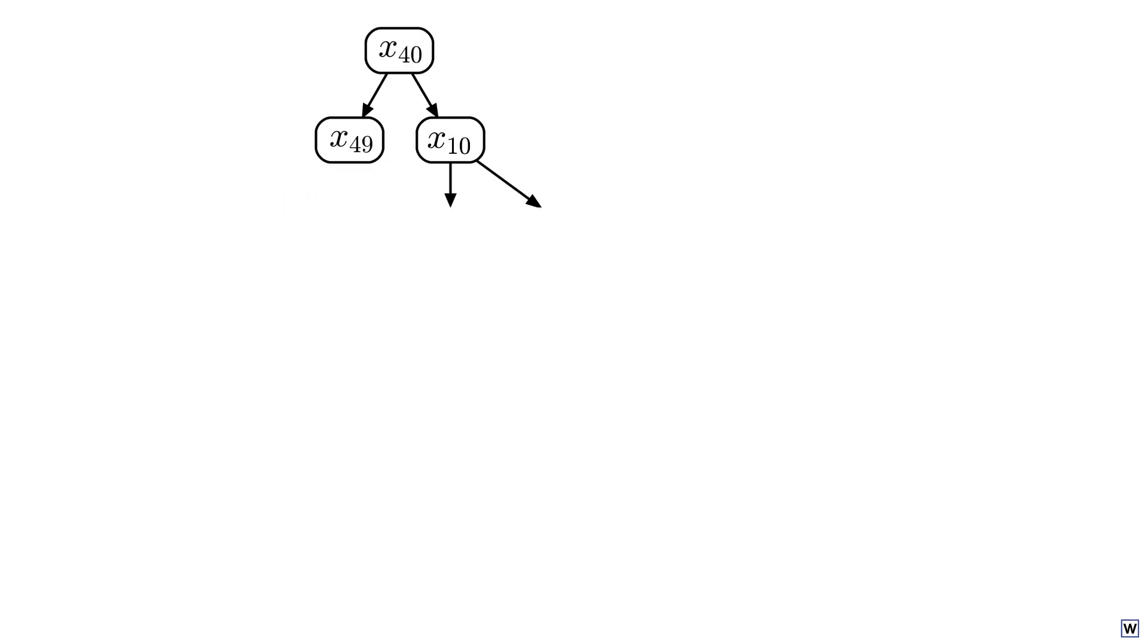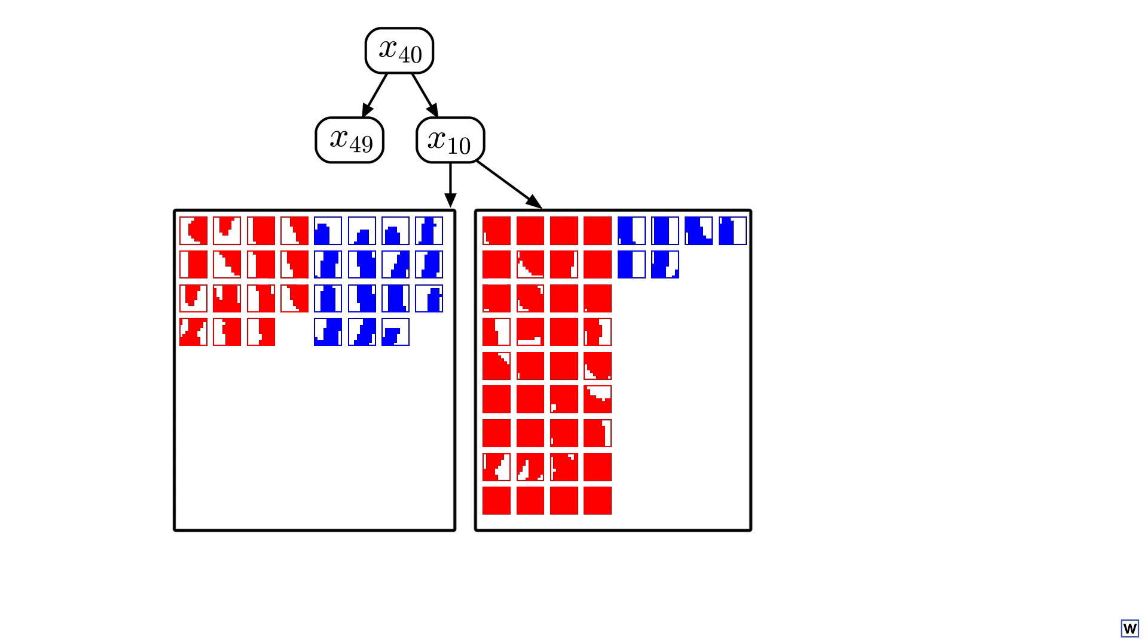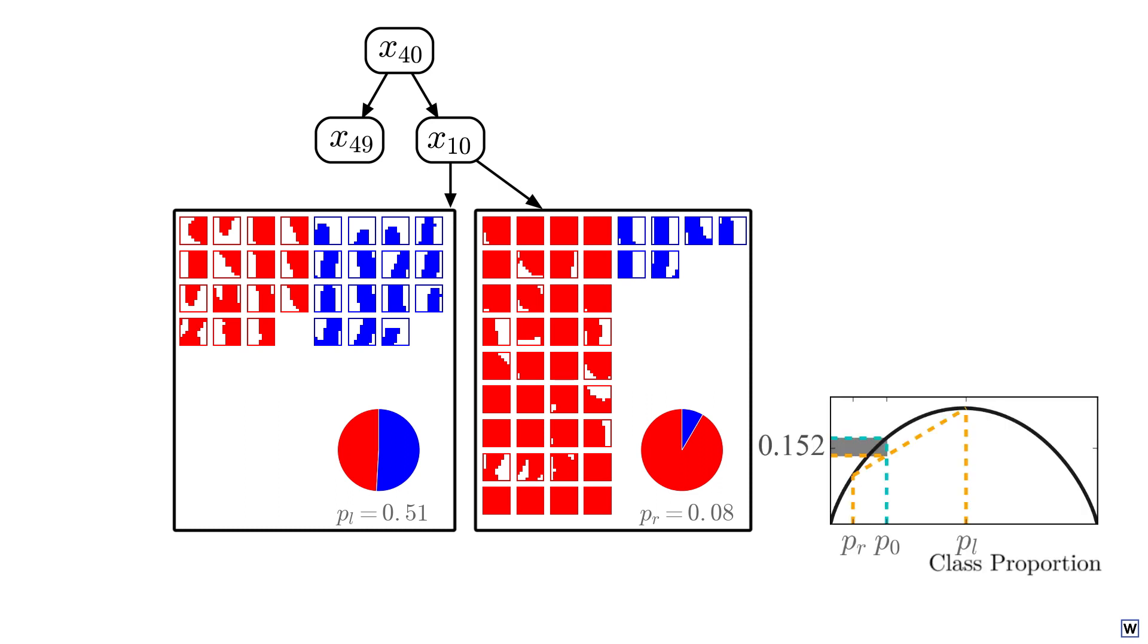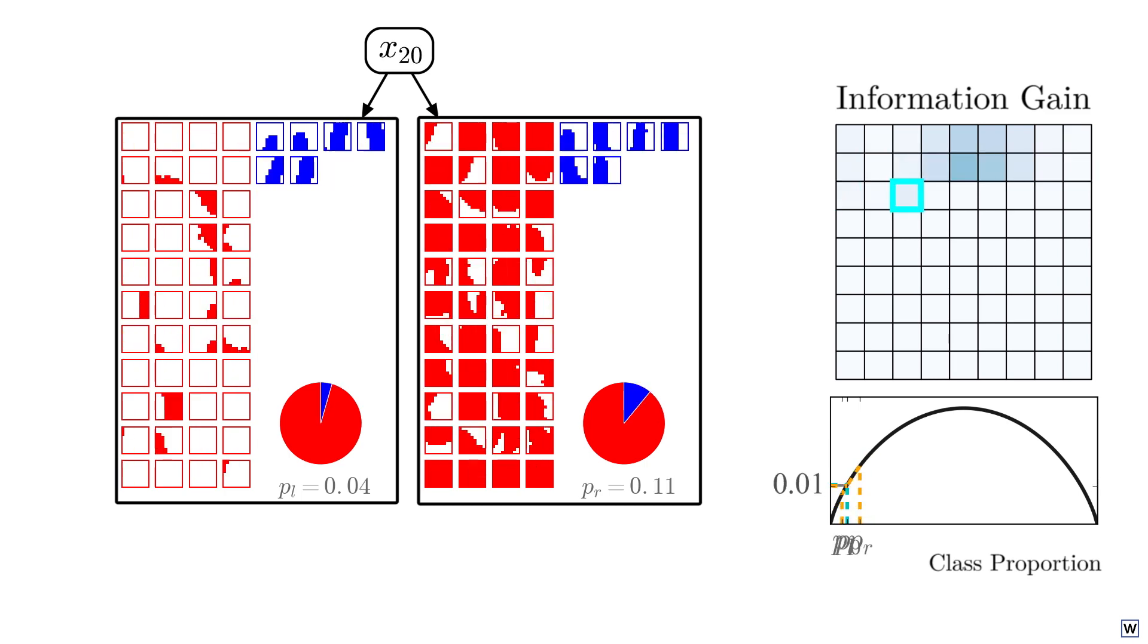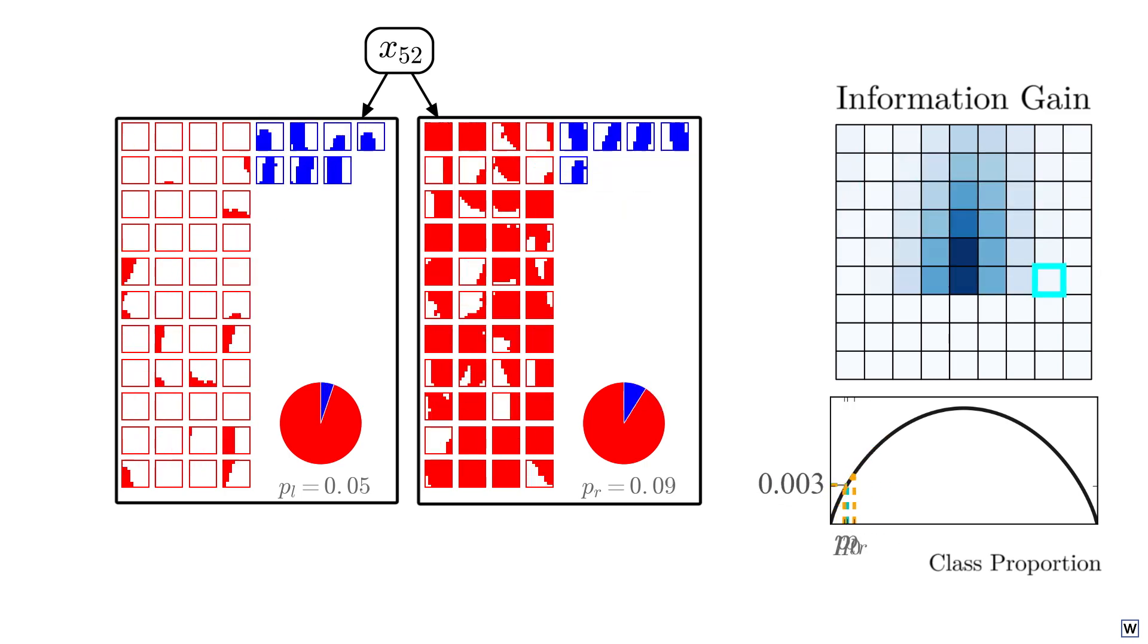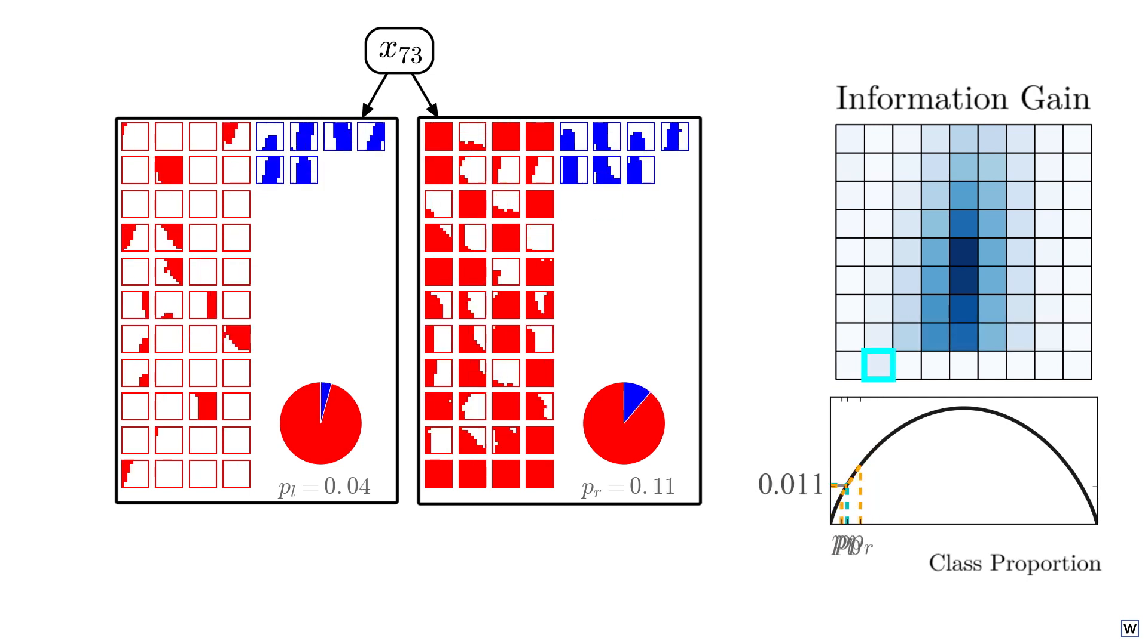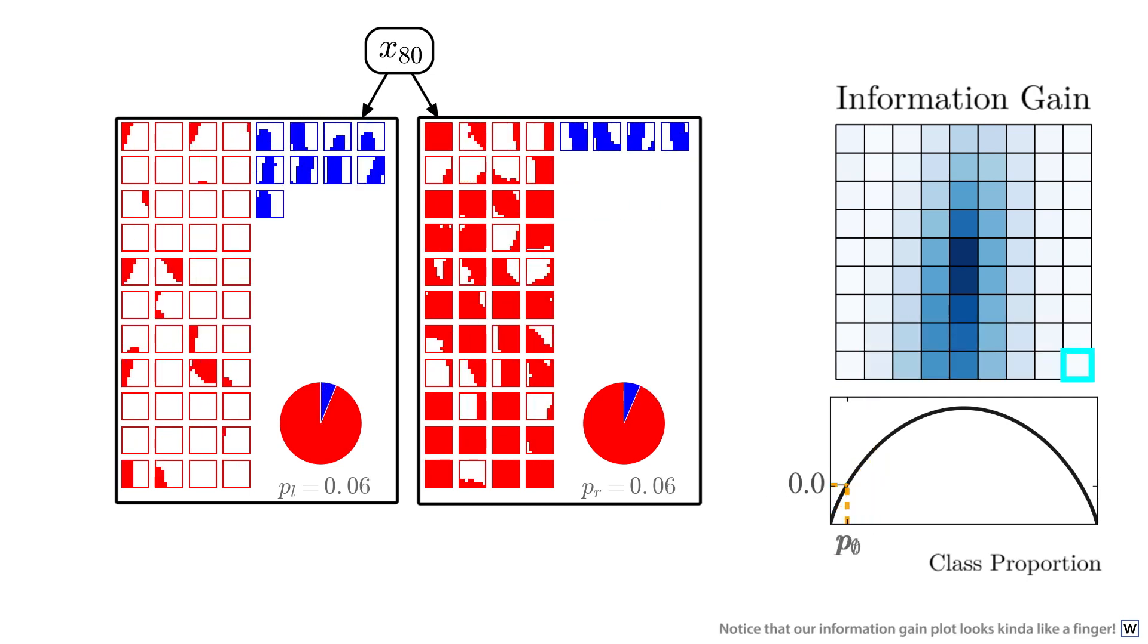As we grow our tree, at each node we must consider splitting on each of our 81 variables. For each possible split, we'll show a subset of the examples that end up in each node, and keep track of our positive class fractions PL and PR. To measure the quality of each split, we'll use our information gain heuristic, and we'll keep track of the information gained by each split in a 9x9 grid, where darker shades of blue represent higher information gains. All right, ready? After we test each of our 81 possible splits, we'll choose the split that gains the most information and move on to the next node.